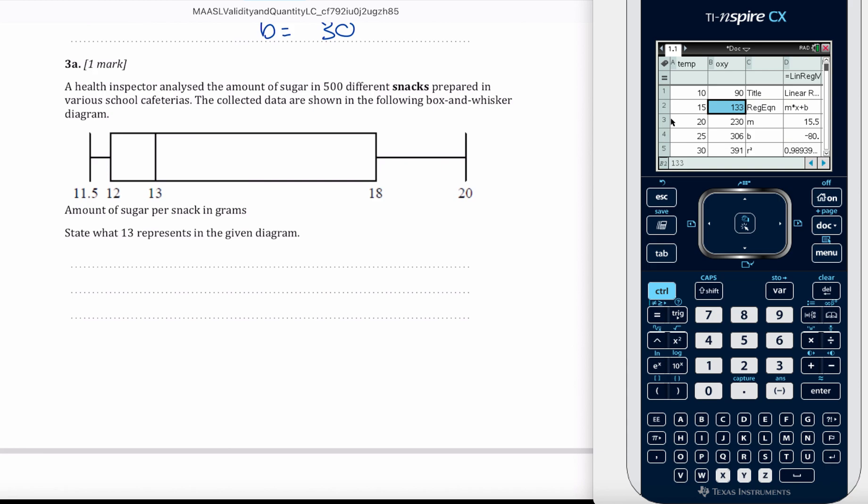A health inspector analyzed the amount of sugar in 500 different snacks prepared in various school cafeterias. The collected data is shown in the following box-and-whisker diagram of the amount of sugar per snack in grams.